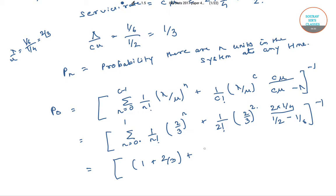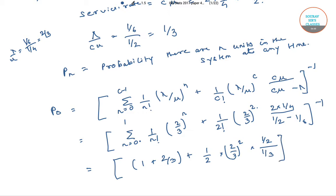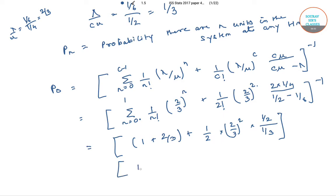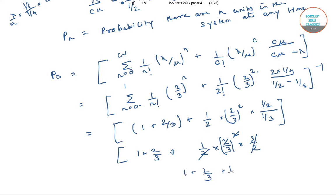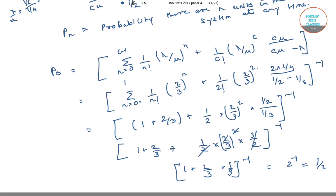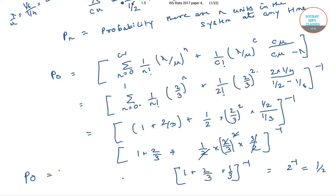Now 2 factorial is 2, so 1 by 2 into (2 by 3) squared into 1 by 2 divided by 1 by 3. This equals 1 plus 2 by 3 plus 1 by 2 into (2 by 3) squared into 3 by 2. The 2s cancel, giving 1 plus 2 by 3 plus 1 by 3, inverse. That equals 2 inverse, which equals 1 by 2. So our P_0 is equals to 1 by 2.